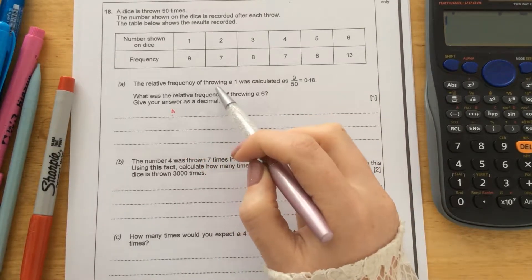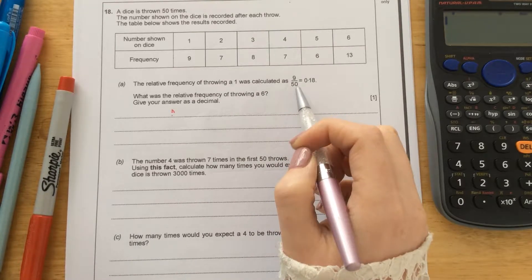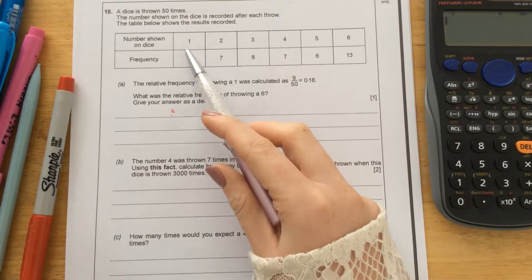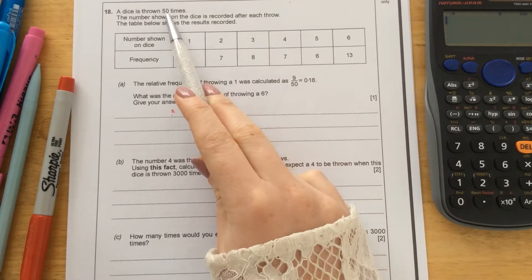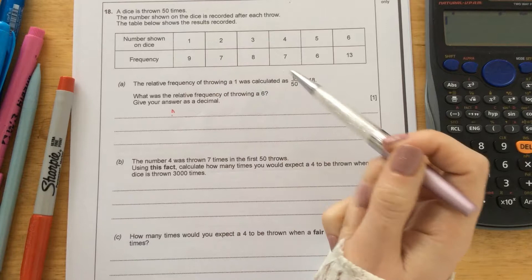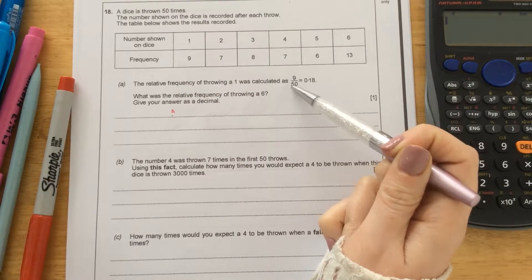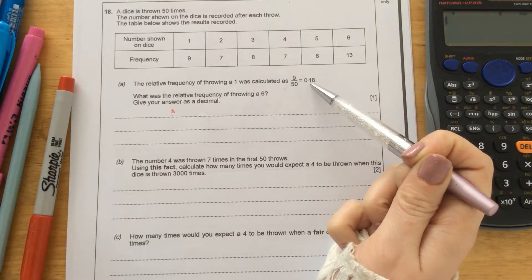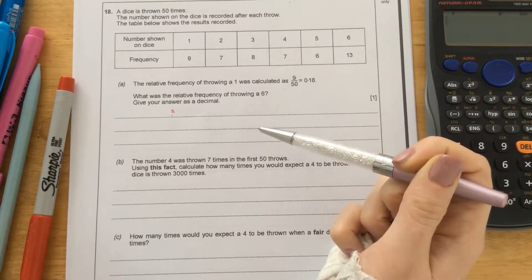The relative frequency of throwing a 1 was calculated as 9 out of 50. So that means that a 1 came up 9 times out of the total 50 throws. So that then is 9 out of 50, and probability can be written as a fraction, decimal, or a percentage. So as a decimal, 9 over 50 would be 0.18.